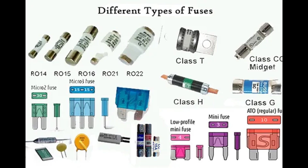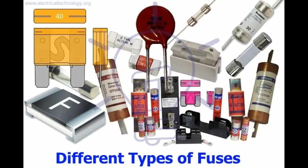When an overcurrent event occurs in a circuit, such as a short circuit or excessive current draw, the protective device needs to respond quickly to prevent damage to the circuit components and equipment. The response time of a protective device depends on its design and operating characteristics. Fast-acting fuses or circuit breakers have a very short response time and can trip within milliseconds to a few cycles of the AC waveform when subjected to overcurrents. These devices are used to provide rapid protection against short circuits and other severe faults.